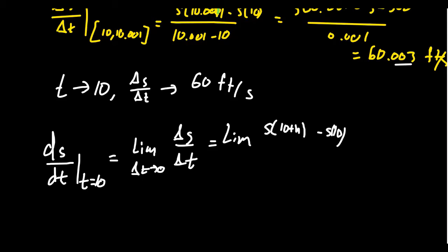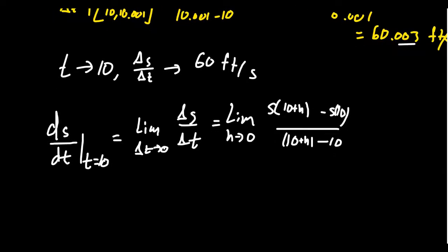The denominator becomes (10 + H) minus 10, which simplifies to just H. So we consider the limit as H approaches zero of [s(10 + H) minus s(10)] over H. s(10) we know is 300. So we need to figure out this limit. Perhaps, like other limits of difference quotients, we can simplify this quotient algebraically in order to calculate the limit exactly.